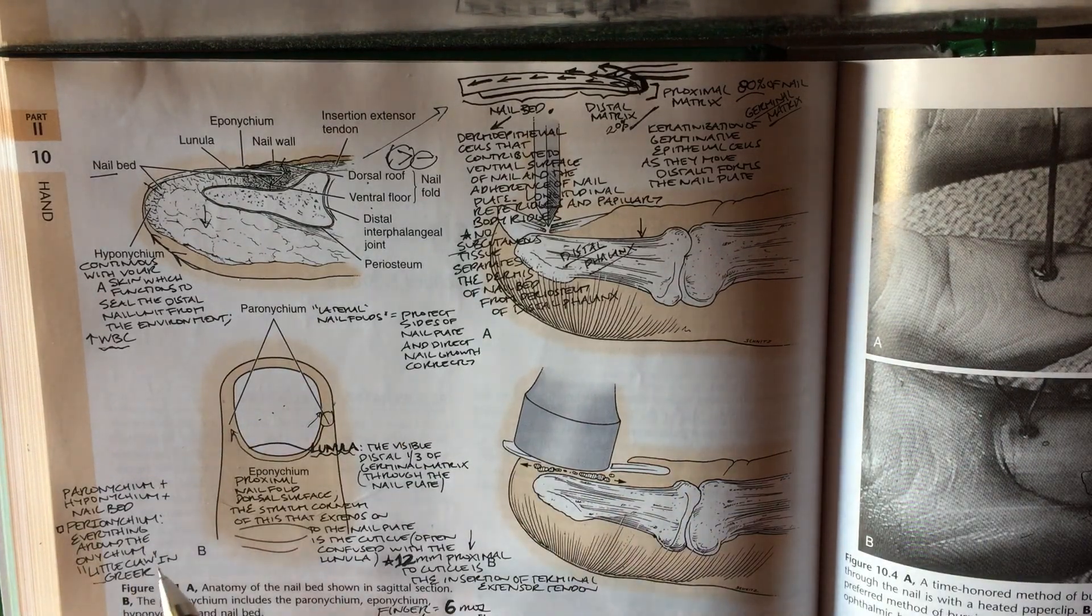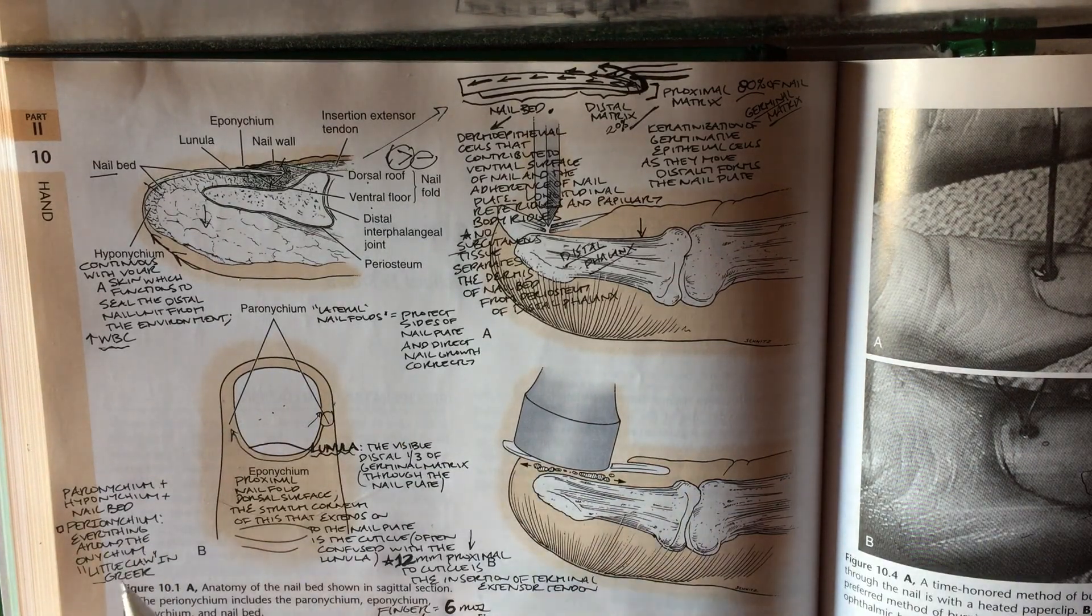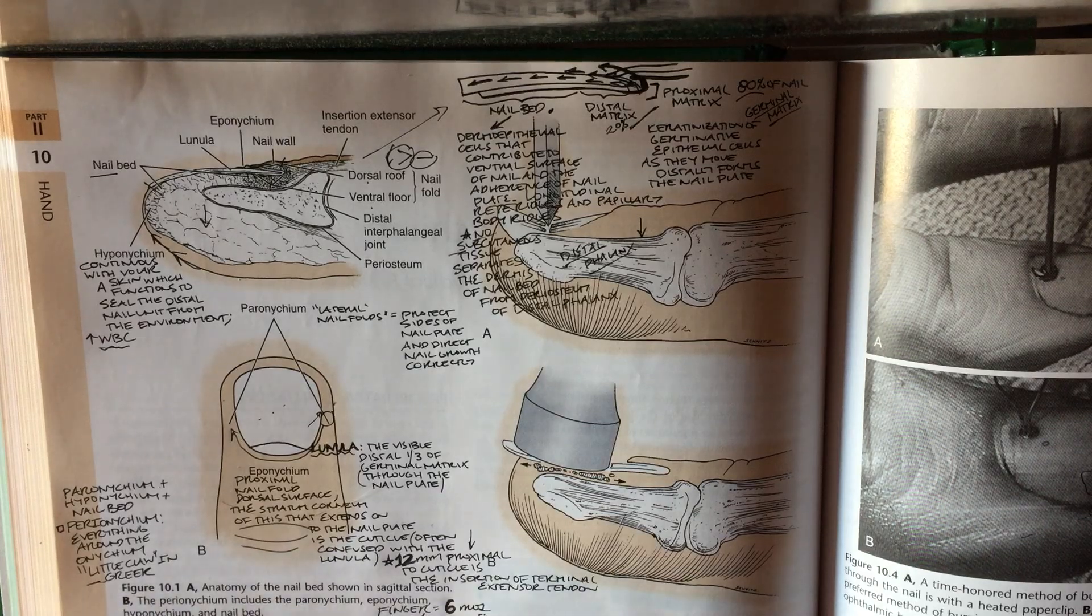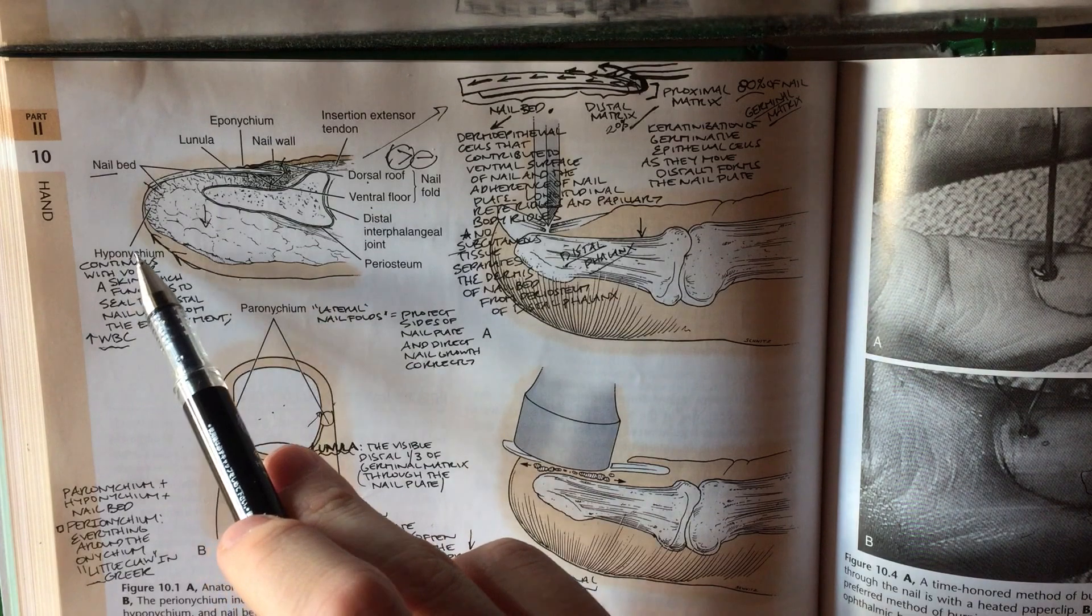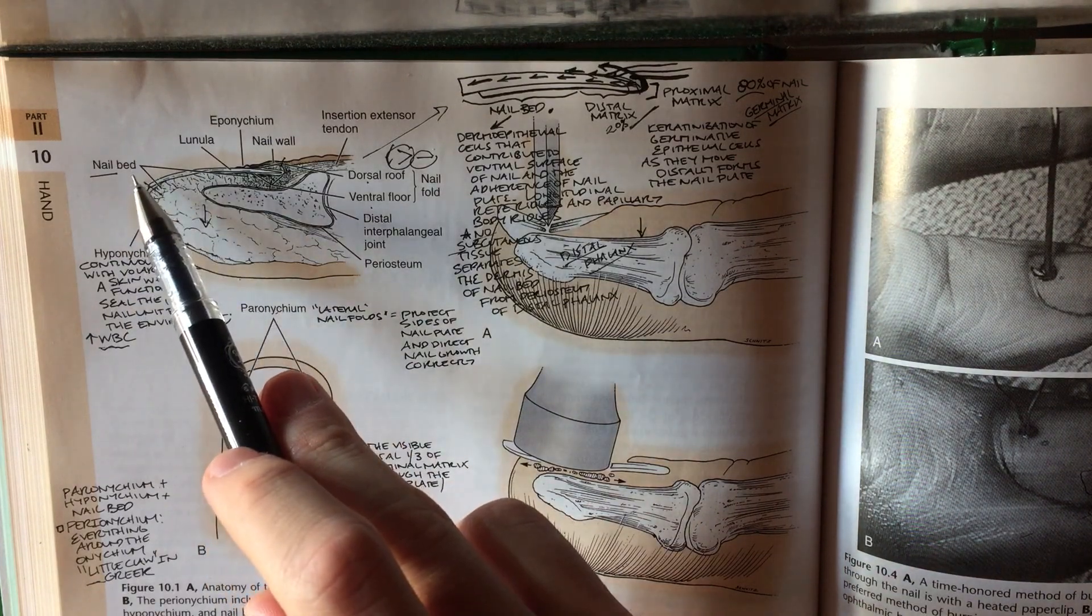First of all, perionichium means everything around the onichium. Onichium means little claw in Greek, so that includes the perionichium, the hyponichium, and the nail bed sometimes called the sterile matrix.